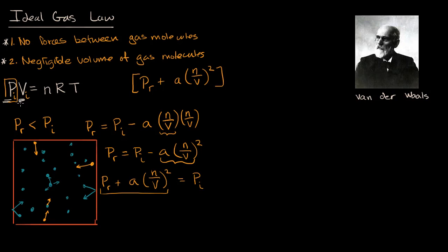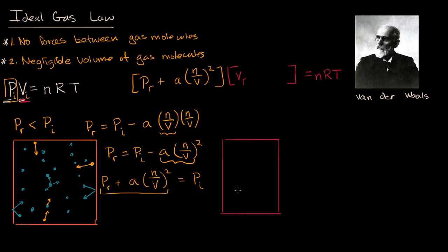Now let's think about how to adjust the volume term. We draw another container and challenge assumption two: we assume the volume of the molecules is not negligible. In this situation, holding everything else constant, if you want the same pressure, your real volume will have to be larger than the ideal volume. The real volume V_real needs to be greater than the ideal volume.